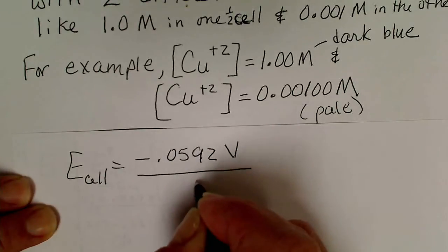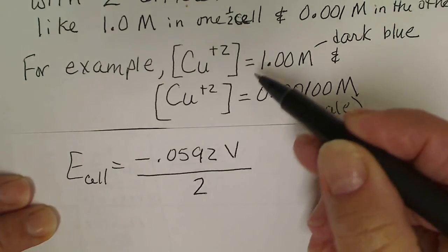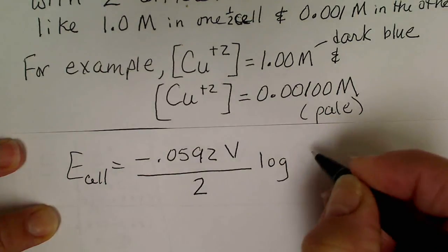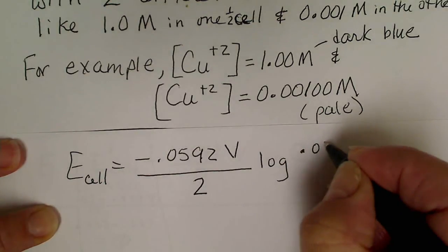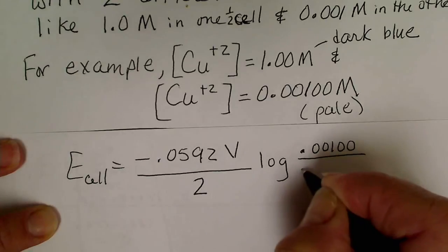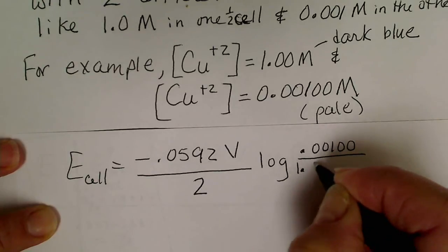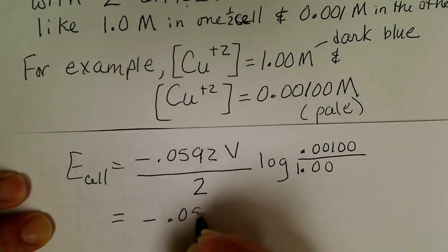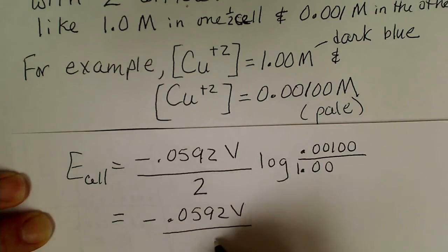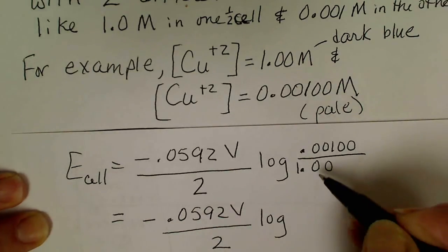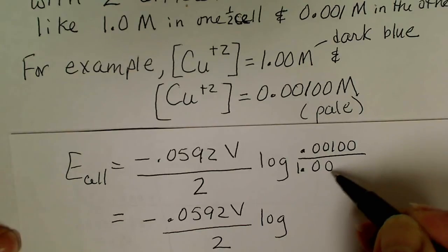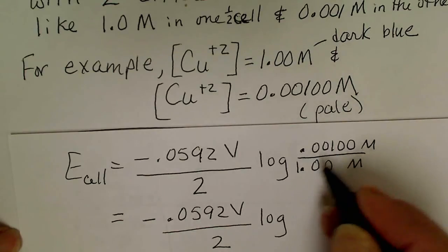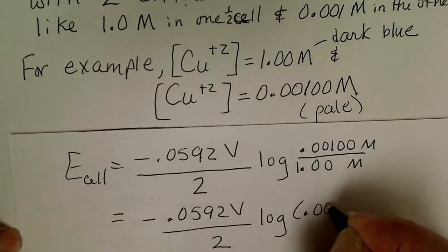In this case n equals 2, because two electrons are transferred for copper. The equation becomes: negative 0.0592 volts divided by 2, times the log of 0.01 divided by 1. Since the more concentrated solution is 1 molar, that simplifies to the log of 0.01, which equals the log of 10 to the minus 2, giving us negative 2. Wait — let me recheck: 0.01 divided by 1 gives log of 0.01, which is negative 2. Actually the transcript notes log of 10^-3, so log of 0.001 divided by 1 gives negative 3.